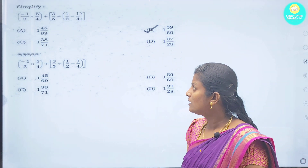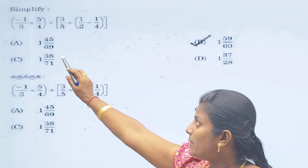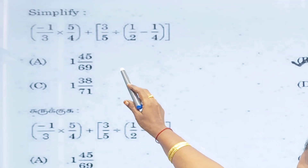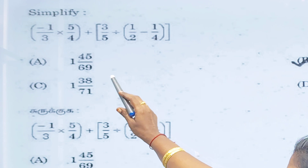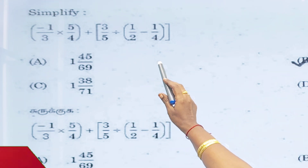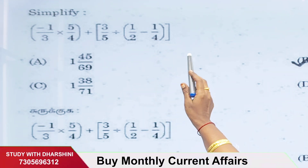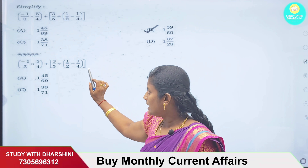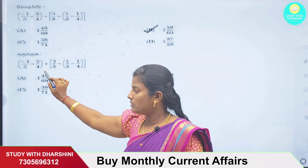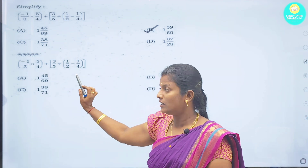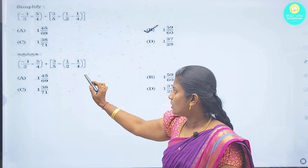First question: minus 1/3 cross 5/4 plus 3/5 divided 1/2 minus 1/4. In this case, there are fractions in all numbers. So how do we solve this?